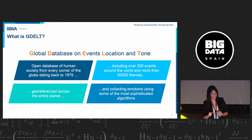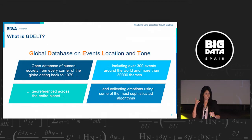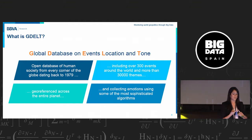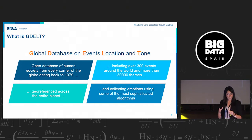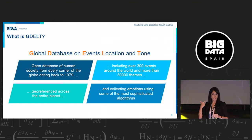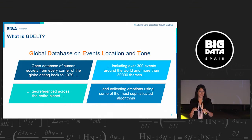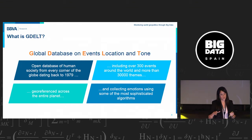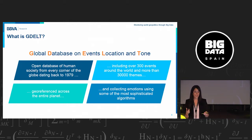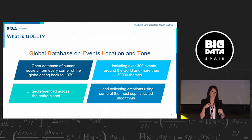GDELT is an open-source database that collects information from media — web, print, and broadcast — at the regional, local, national, and international levels. This database covers from 1979 to today and is updated almost in real time, every 15 minutes, collecting information in 65 different languages.